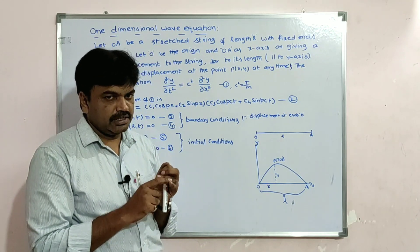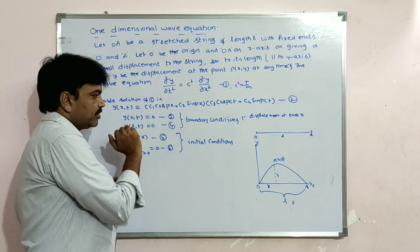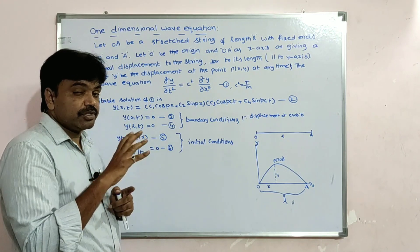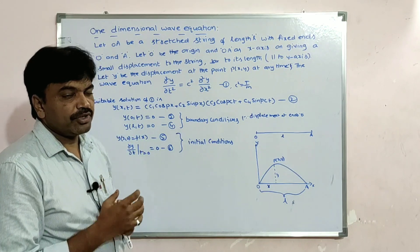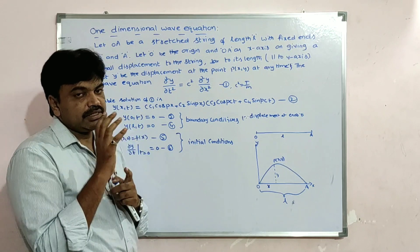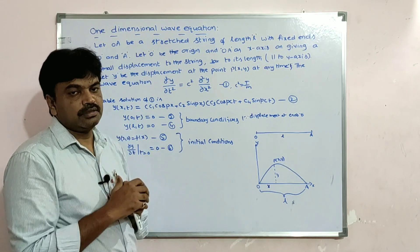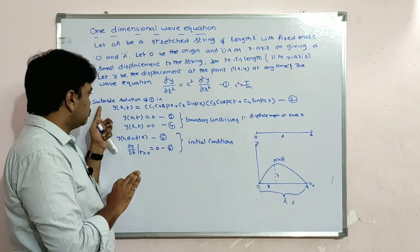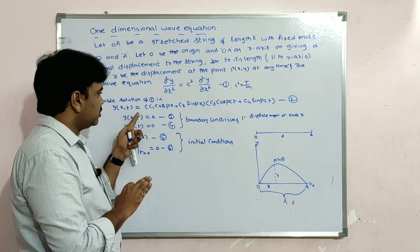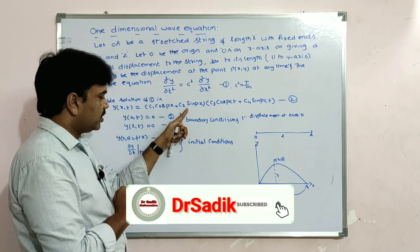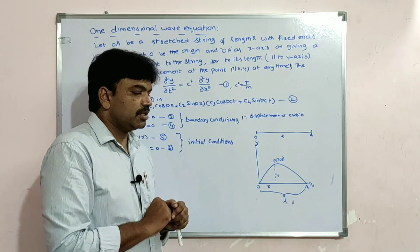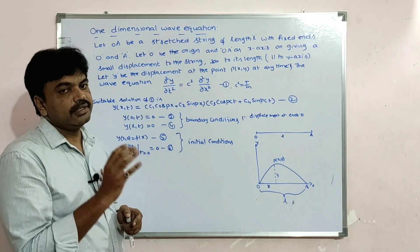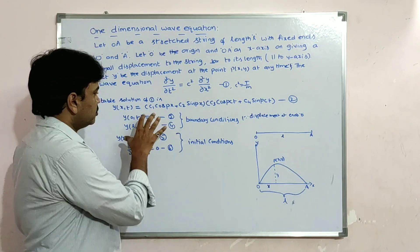One solution is algebraic in x, one is exponential, and one is trigonometric. The algebraic and exponential forms have no periodic nature. Only the trigonometric solution — containing sine and cosine — has periodic nature. That is why the suitable solution is y(x,t) = (c1 cos px + c2 sin px)(c3 cos pct + c4 sin pct).